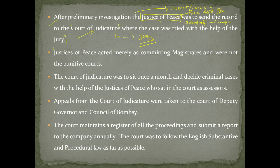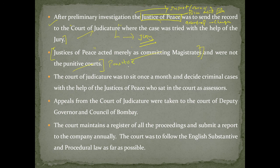The Justice of Peace acted merely as committing magistrates and were not punitive courts. This point is very clear: the Justice of Peace only conducted the investigation and submitted the report — they had no punitive powers. They were acting merely as committing magistrates; the punitive powers rested with the Court of Judicature.